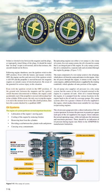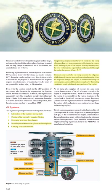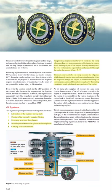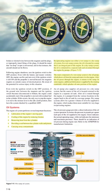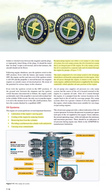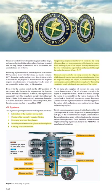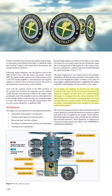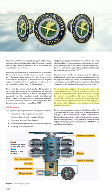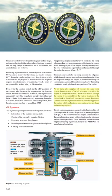The engine oil system performs several important functions: lubrication of the engine's moving parts, cooling the engine by reducing friction, removing heat from the cylinders, providing a seal between the cylinder walls and pistons, and carrying away contaminants. Reciprocating engines use either a wet sump or a dry sump oil system. In a wet sump system, the oil is located in a sump that is an integral part of the engine. In a dry sump system, the oil is contained in a separate tank and circulated through the engine by pumps. The main component of a wet sump system is the oil pump, which draws oil from the sump and routes it to the engine. Dry sump systems allow for a greater volume of oil and are more suitable for very large reciprocating engines.